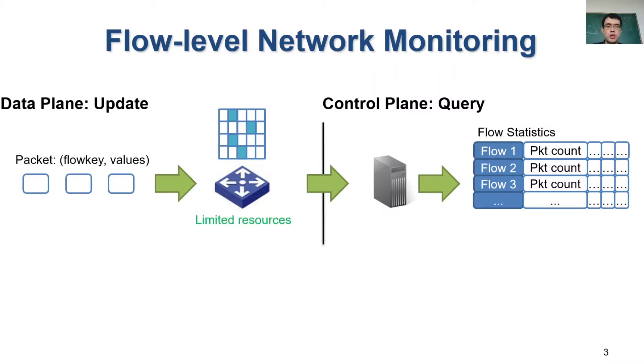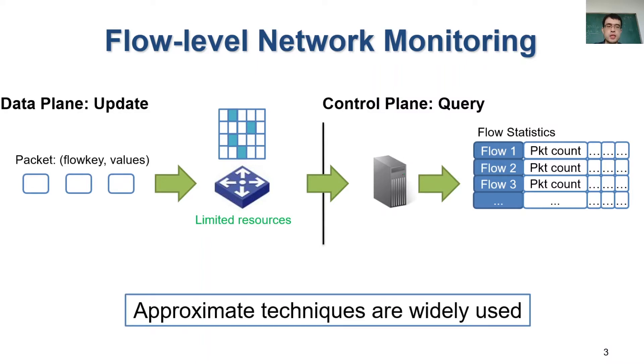In network monitoring, the resources in network devices are very limited compared to the huge volume of network traffic. So existing network monitoring uses many approximate techniques such as sampling or sketch to make a tradeoff between accuracy and resource efficiency. They sacrifice a portion of accuracy to reduce resource overheads, and in general they also provide theoretical guarantees to bound the accuracy degradation.